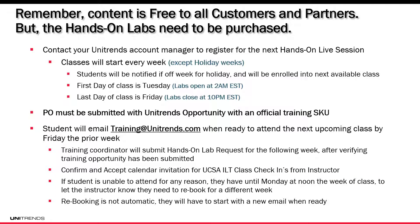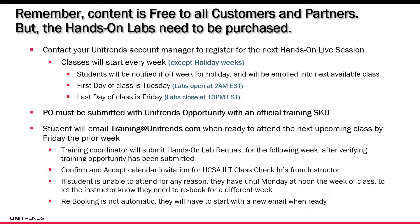If the student is unable to attend for any reason, they have until that Monday at noon — the week of their class — to let the instructor know they need to rebook for a different week. Rebooking is not automatic; you'll have to start with a new email when you're ready. Whenever you're ready that Friday before, send that email and say you're ready for next week, and we'll order you a seat and send you that calendar invitation.